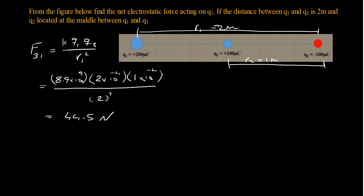To decide the direction of this force: q3 is a negative charge and q1 is a positive charge, so they generate an attraction force. That means the direction of the force on q3 due to q1 will be directed toward q1. Going to our target q3 and looking at it, the force F31 points toward q1.